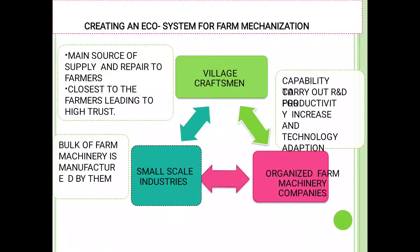Creating an ecosystem for farm mechanization: village craftsmen and small scale industries toward organized farm machinery companies. These are the main source of supply and repair to farmers, closer to the farmers, leading to high trust. Second, small scale industries — bulk of farm machinery is manufactured by them. Number three: capability to carry out research and design, productivity increase, and technology adaptation.